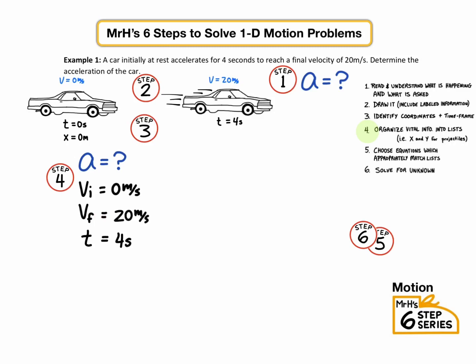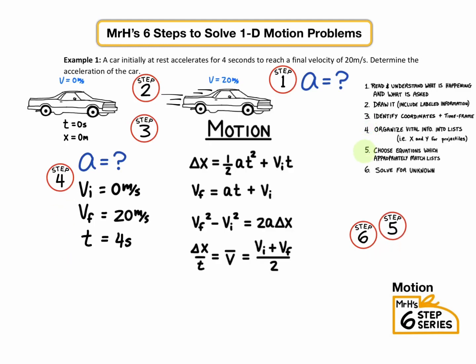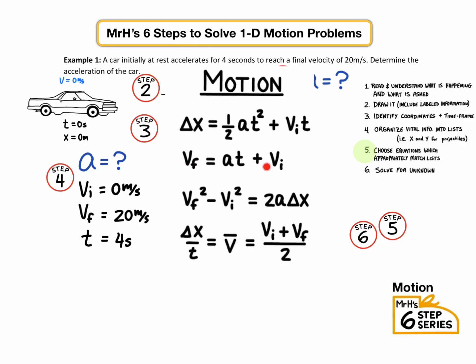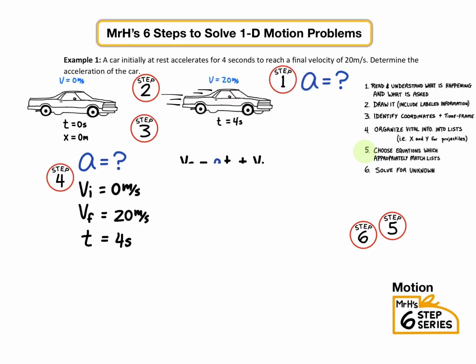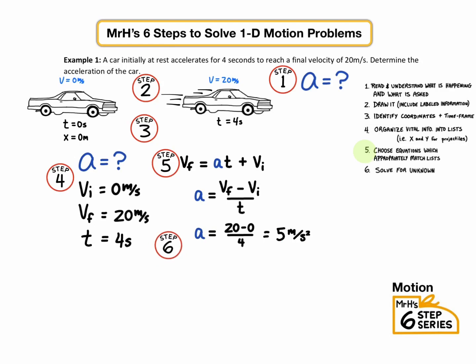Step five, we have to choose an equation that matches this information. So we look at our equation sheet, and we find this formula, VF equals AT plus VI, which is really just the definition of acceleration rewritten. So we can say A equals VF minus VI divided by T. Then we plug in our values, and we're done.